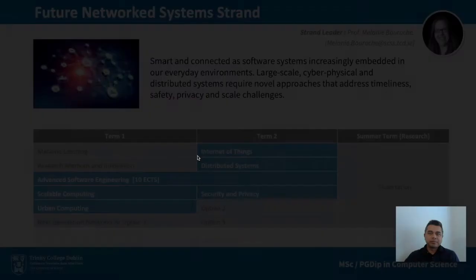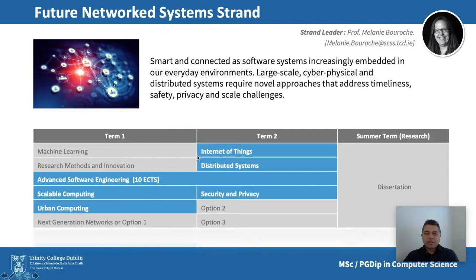The future network systems strand is closely tied with the themes of the National Research Center Connect, which has a long history of innovation, research, and startup companies in the areas of networks and distributed systems. This strand deals with intelligent and connected technologies employed for increasingly diverse applications in our everyday lives, addressing challenges of large-scale cyber-physical and distributed systems — how to deliver them in a timely and safe manner at scale. Key topics include cloud computing, internet of things, smart cities, urban computing, and cyber security.